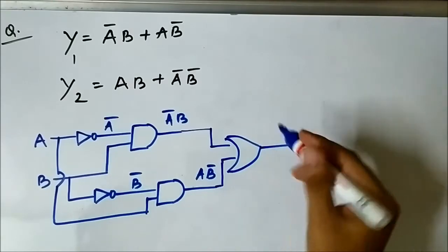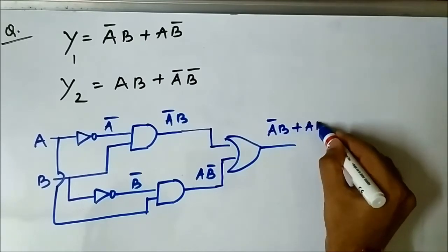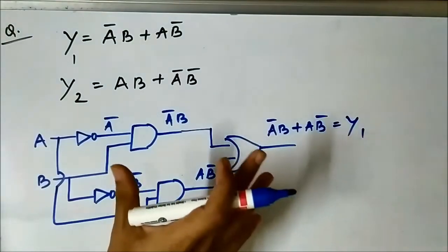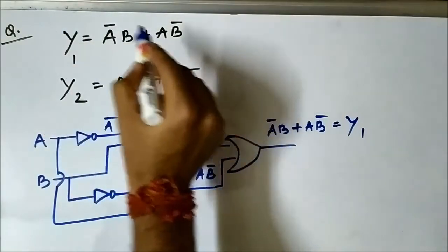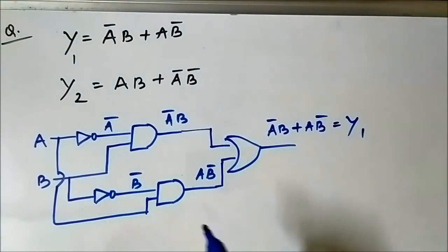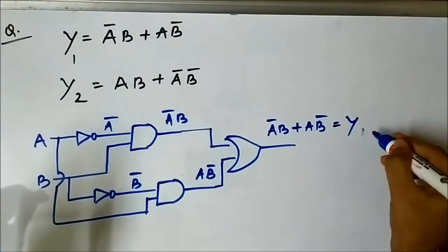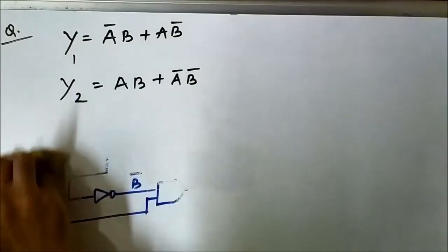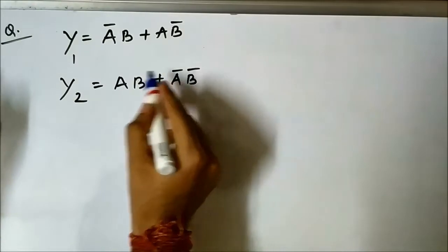The OR gate gives us the final output ā·b + a·b̄, which is y1. We have got the first output y1. Now we will design the second expression. Let us erase this and proceed.